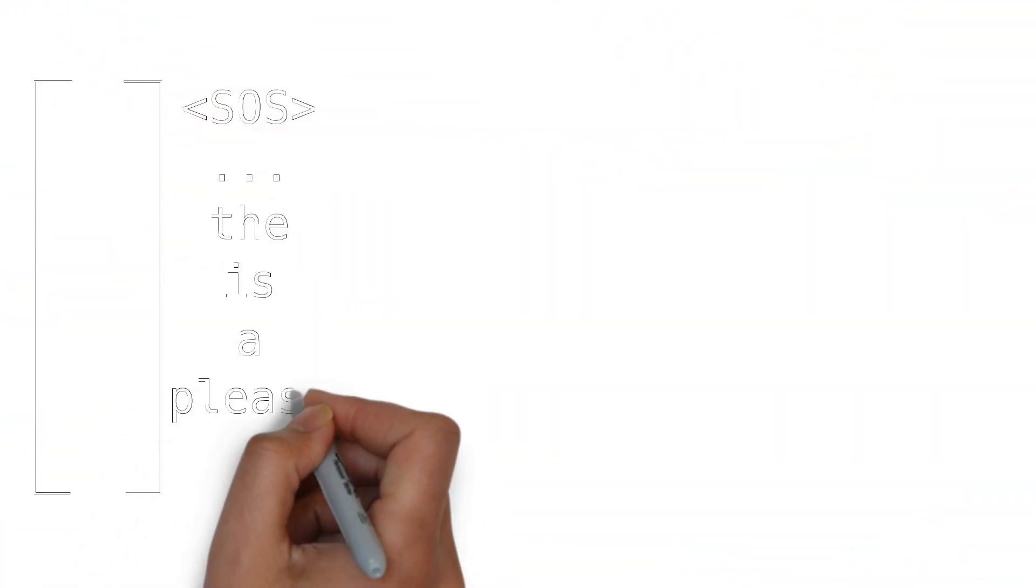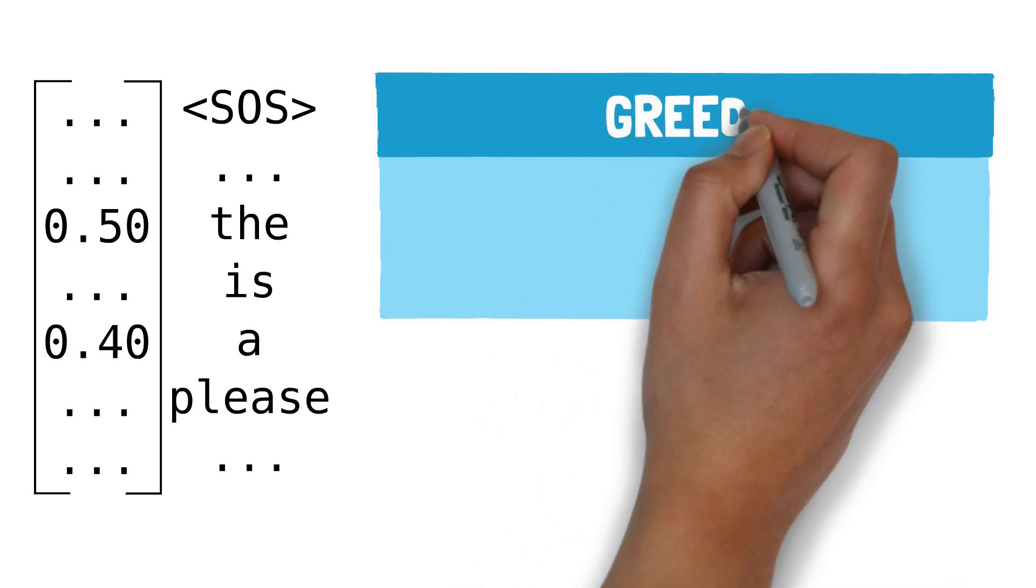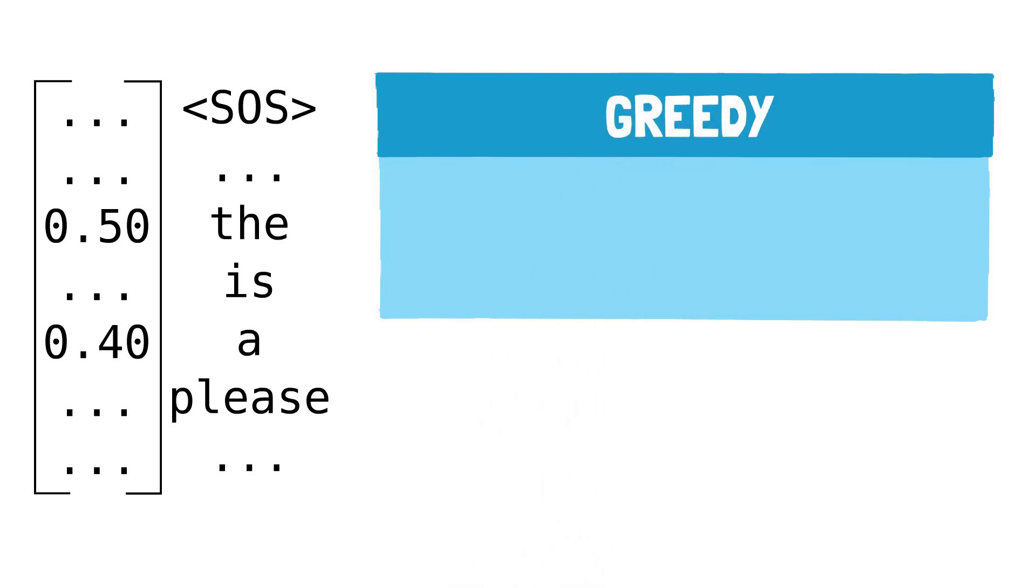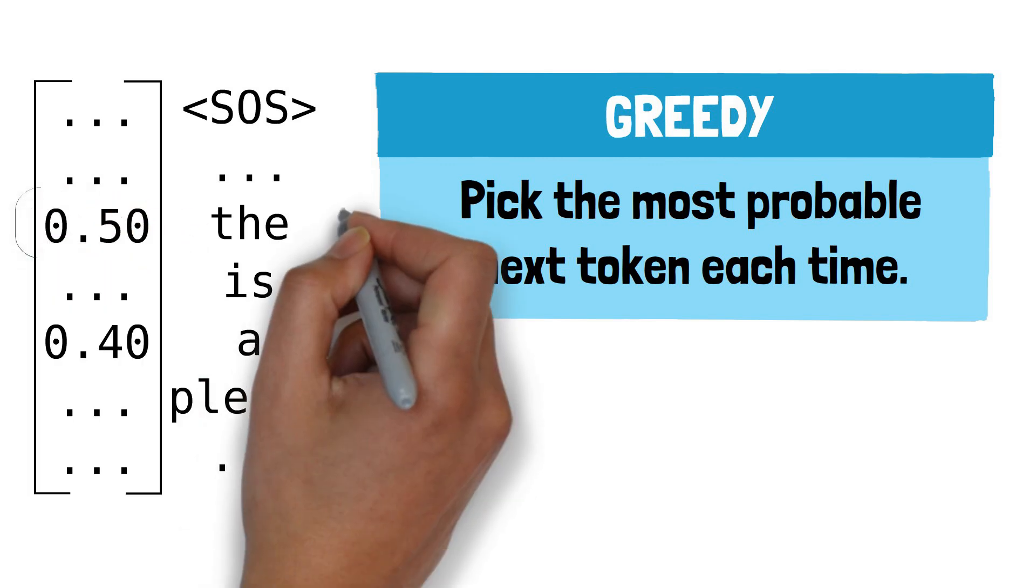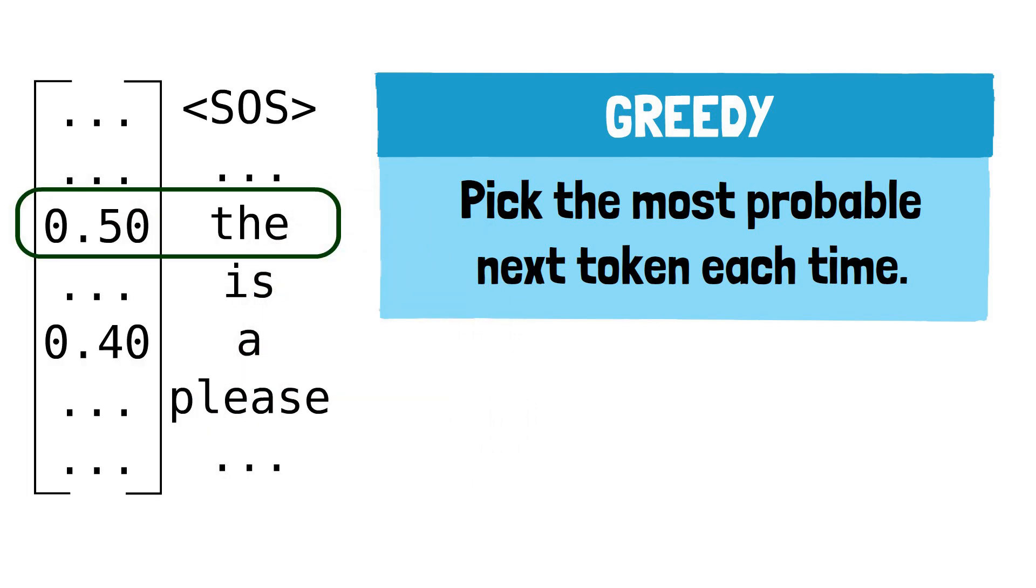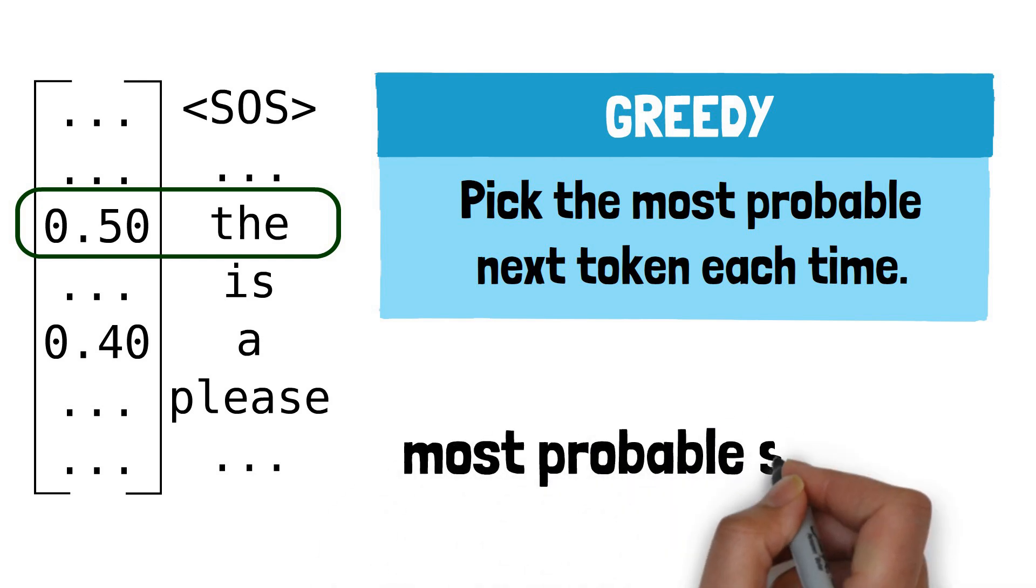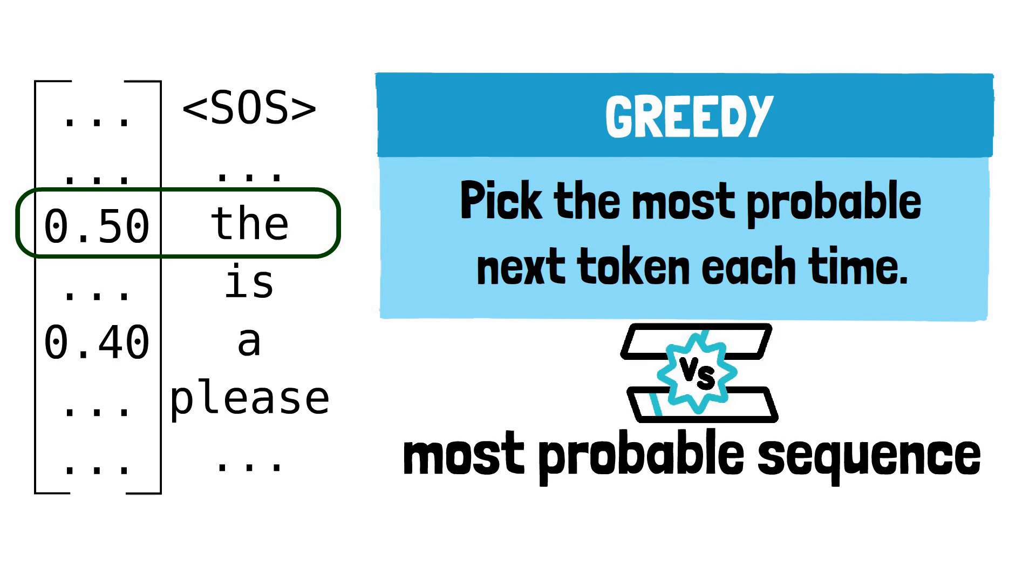You'll remember that in a previous episode on language modeling, we discussed the greedy approach for selecting the next word in a sequence. This method picks the most probable next word each time based on the model's predictions. However, when it comes to translating sentences, ideally we want to output the most probable sequence, which is not the same as always selecting the most probable token at each step.